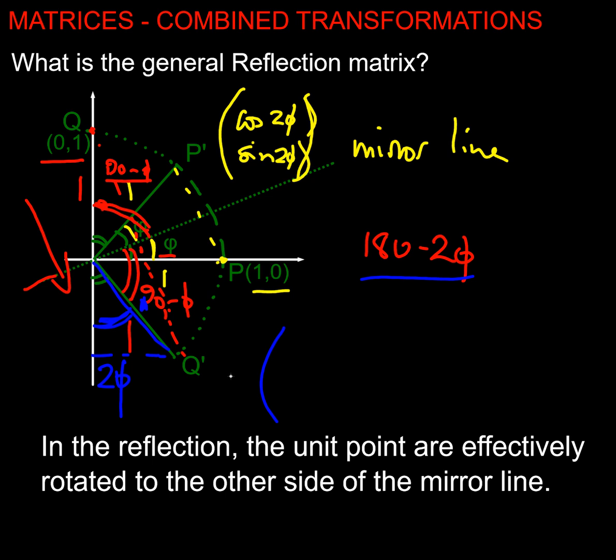Because the x value is going to be this distance here, which is going to be sine 2 phi. That's positive, isn't it? And the y value is going to be that distance there, which is negative. And it's cos 2 phi. There we go.